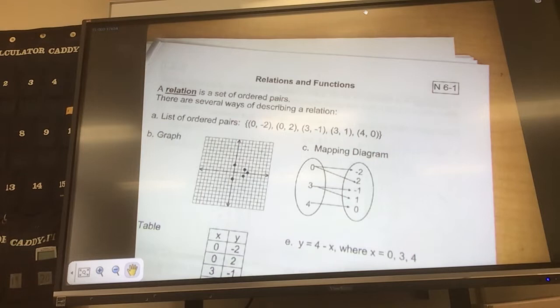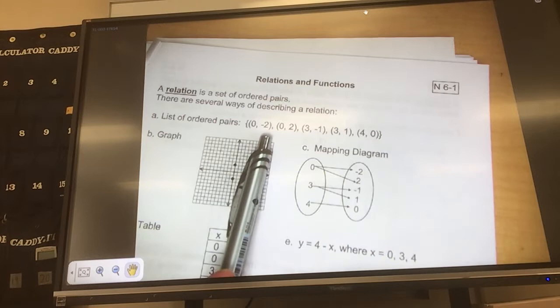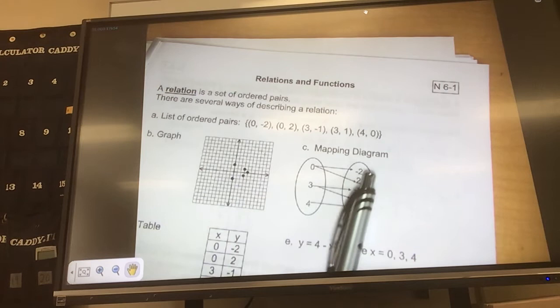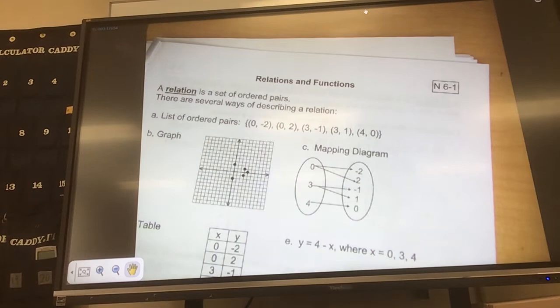This is the ordered pair, 0, negative 2. If you look over here, I go over 0, down 2, and I put the point there. Same deal with the rest of them. So, here's a map of this data. 0 goes to negative 2, and then you see 0 goes to 2 as well. Table says the exact same thing in table form, and then that's an equation form.